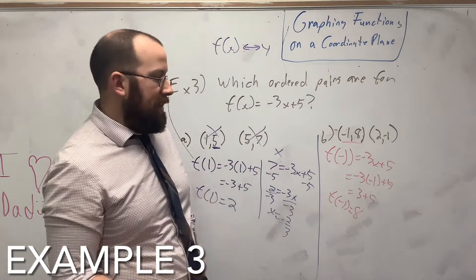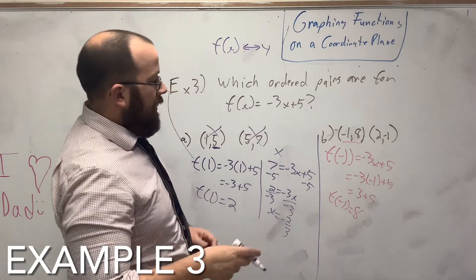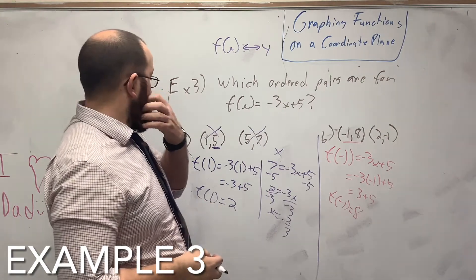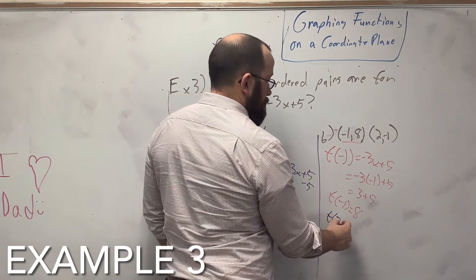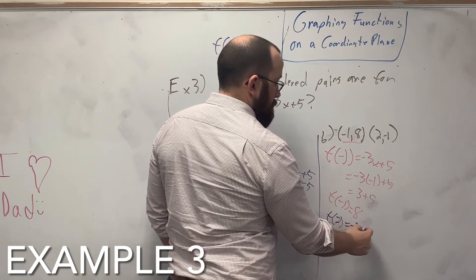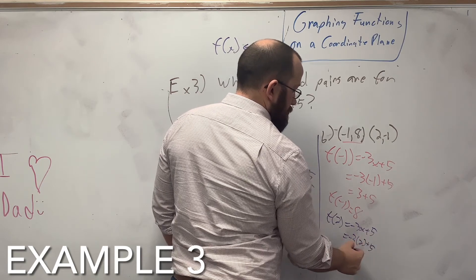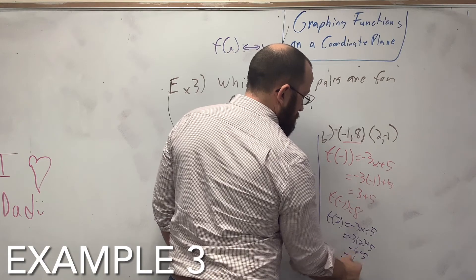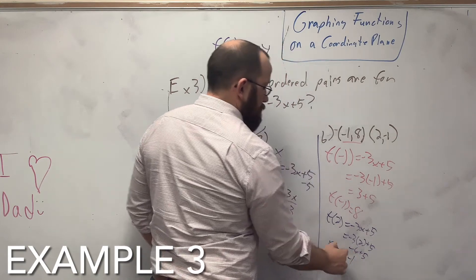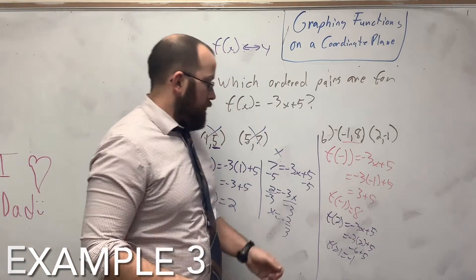But we have to always check the second one just in case. So f of 2 equals negative 3x plus 5. Plug it in to get 2. So then get negative 6 plus 5, which is negative 1. So that also works. And there you go. So this whole, well, yeah.